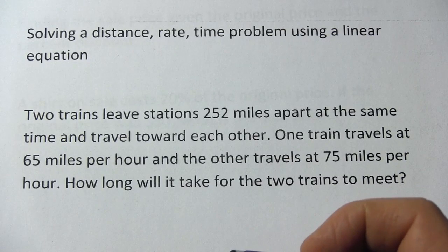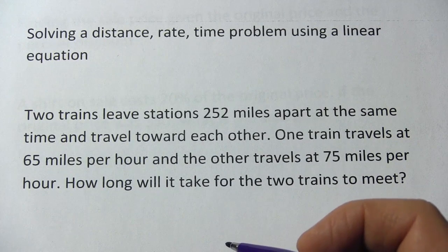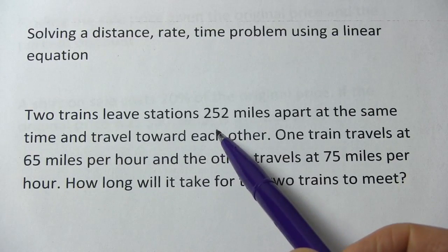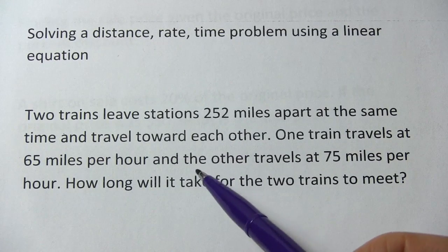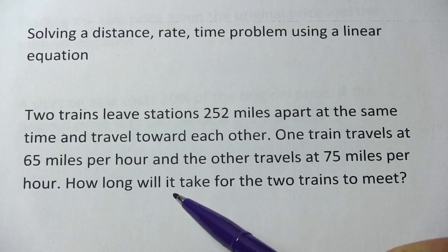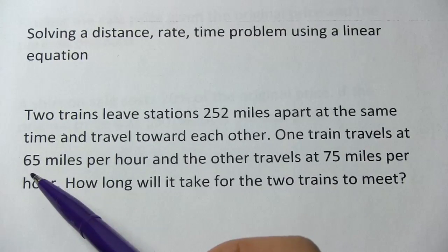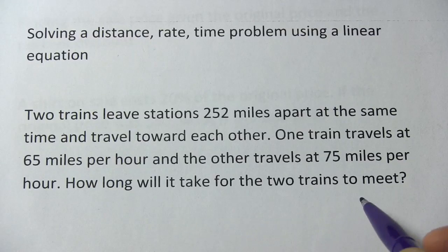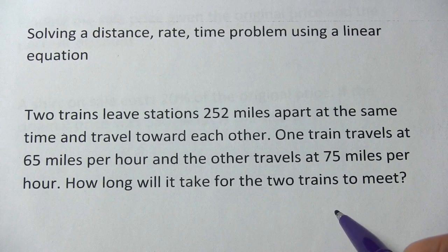Here we've got a fairly complicated problem that involves distance, rate, and time. This is one of those where you have two trains. These trains are 252 miles apart. They leave different stations at the same time and travel towards each other, one going 65 miles per hour, the other going 75 miles per hour, and the question is how long will it take for the two trains to meet?